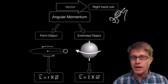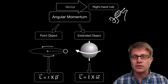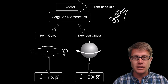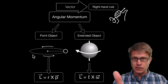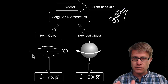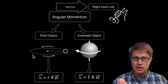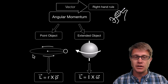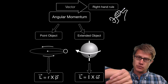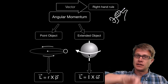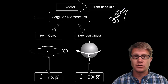To figure out the direction of this vector, you will use the right hand rule. If the object is spinning in one direction and you curl your fingers in the direction of that spin, the angular momentum points upward. If it is rotating the other direction, it acts in the downward direction.